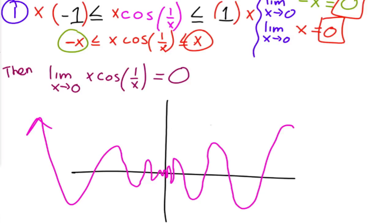And then negative x looks like this. So what's happening is it's getting squeezed right here by those two functions. And so at 0, as you get closer and closer to 0, this function is also going towards 0.